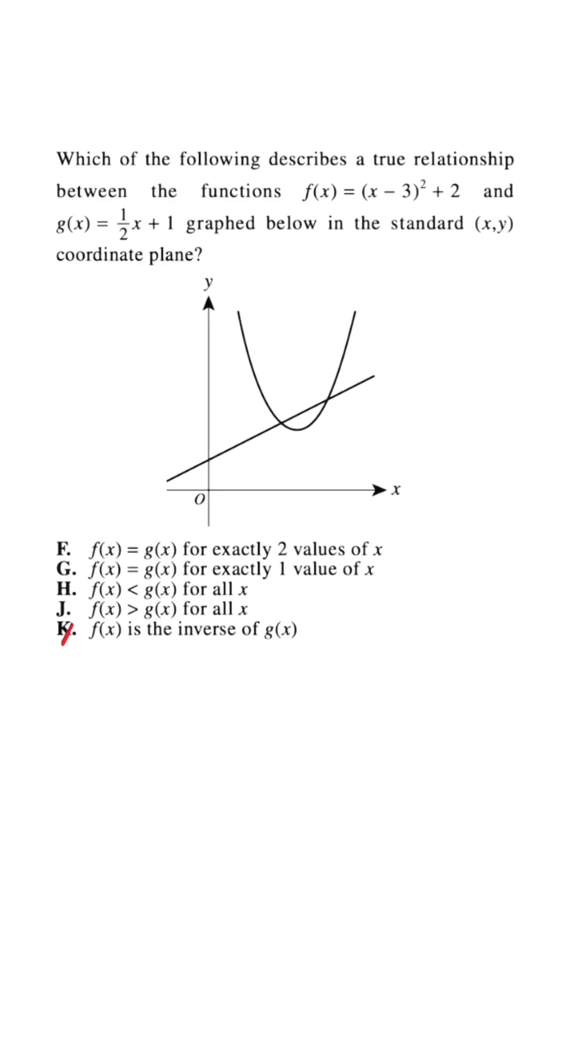When we look at H and J, because there's points of intersection, that's probably going to be incorrect because there are values where G of X is not less than F of X or vice versa. There are values where G of X is greater than or equal to F of X. So H and J are gone.